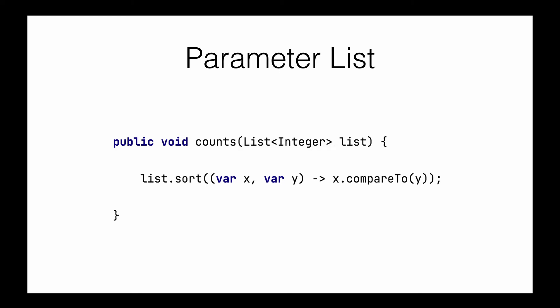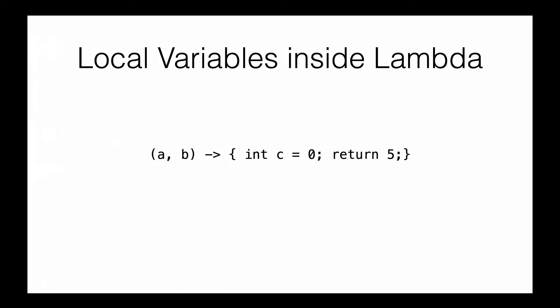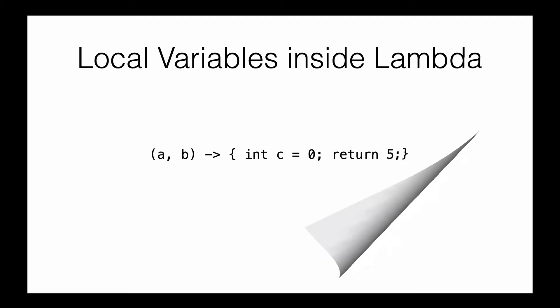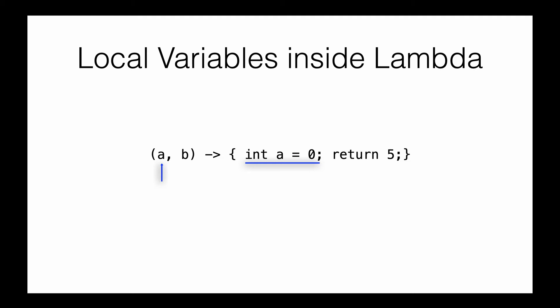Those are all the examples you need to know from the type inference type of question. Now let's look into local variables. A local variable of a lambda body is a variable that is declared within the body. In this case a lambda is defined which takes a and b as parameters, and within the body we are defining a local variable called c — int c equals 0 — and we are simply returning 5. Having multiple lines and local variables in a lambda is perfectly valid Java syntax. Now look at this lambda expression where in the body we are trying to declare a variable a and assign a value. This will fail because we already have a variable called a in the parameters, so you need to be careful of the lambda signature to identify these kinds of issues.